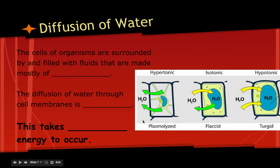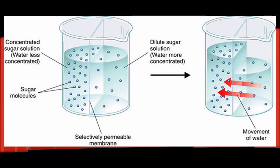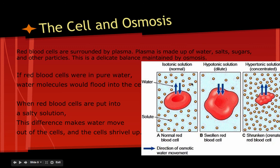Hypertonic means the concentration of solutes outside the cell is greater than inside, so water flows out of the cell. Hypotonic means the concentration of solutes is greater on the inside, so water flows into the cell. Looking back at our diagram, the concentration of solutes is greater on one side, so more water flows to that side. Red blood cells, for example, are surrounded by plasma — made up of water, salt, sugar, and other particles — and a delicate balance is maintained by your kidneys and osmosis.